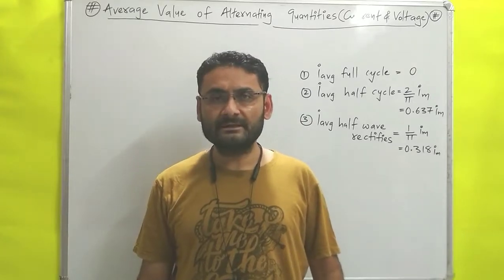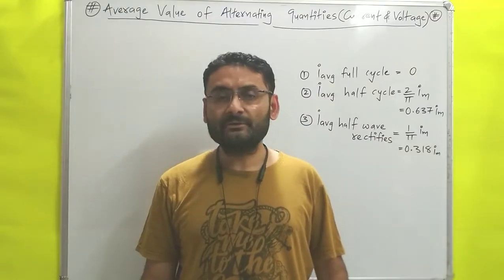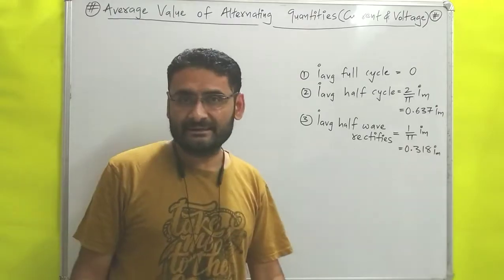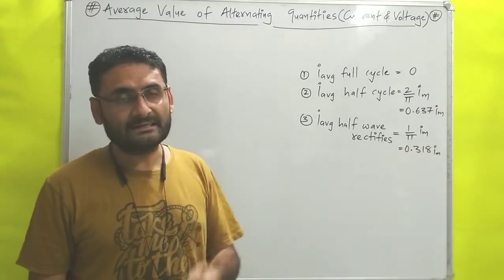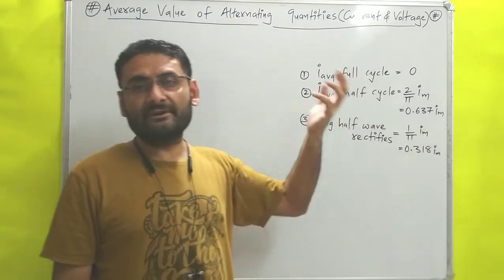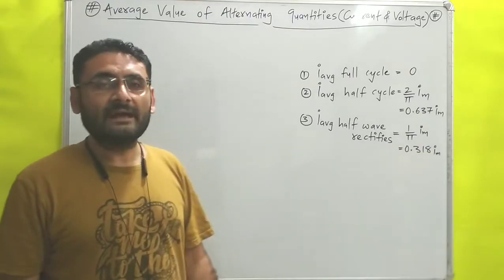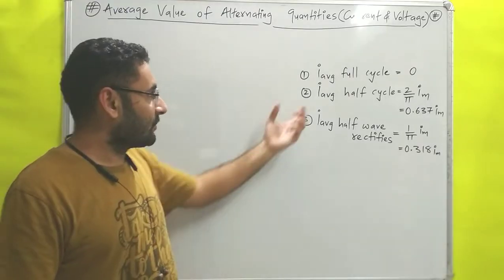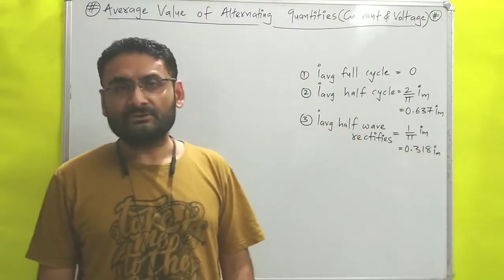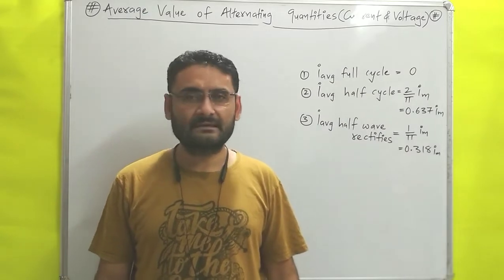Hello students, today we will study unit number 2, AC circuits, in which we are going to understand the meaning of average value of alternating quantities. In this video we will understand the meaning of average value of current and average value of voltage. We are also going to derive the average value of current for full cycle, for half cycle, and for half wave rectifier. I hope you are ready with your pen and paper, so without wasting much time let us start.